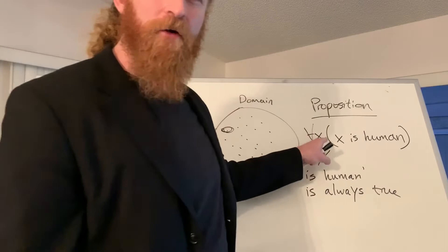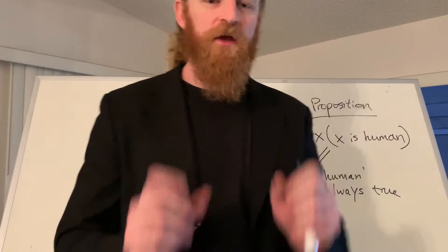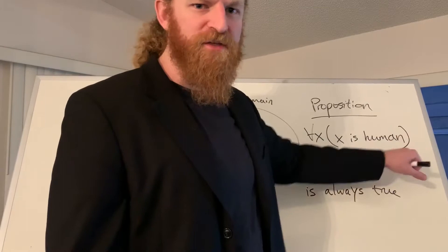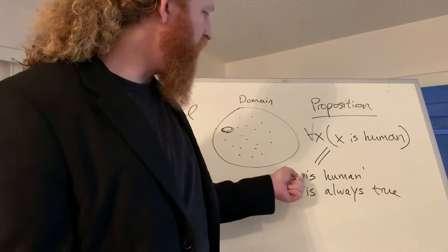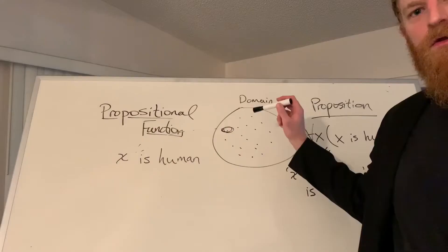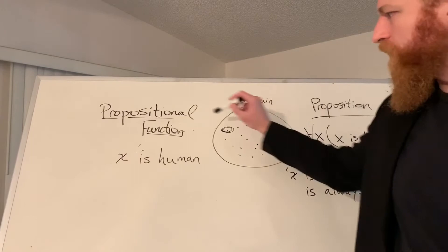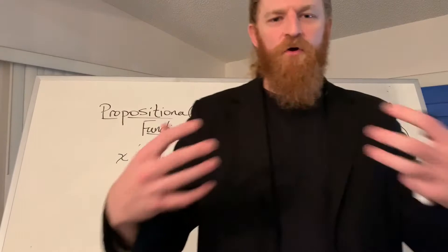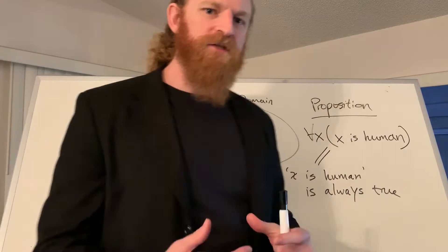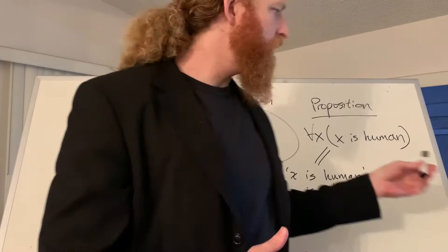Russell has a very distinctive interpretation of what this universal quantifier means. For him, it's a higher-order property — a property not of objects, but of propositional functions, of linguistic items. When we put this universal quantifier in front of our propositional function, what we get is the claim that the propositional function 'X is human' is always true. No matter which object you put into the propositional function, it's always going to come out true. That move is going to be very important, because by using these quantificational devices, Russell is going to show us a way to get rid of denoting phrases and instead put in quantifiers.